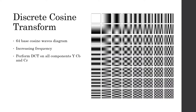First, we apply the discrete cosine transform on each 8x8 block. The diagram we are seeing is the 64 base cosine waves diagram. These are the 64 cosine functions that can be combined to make any 8x8 block. The increasing frequencies of the cosine functions show different shades. When we take the discrete cosine transform of each 8x8 block, we get back the DCT coefficients.